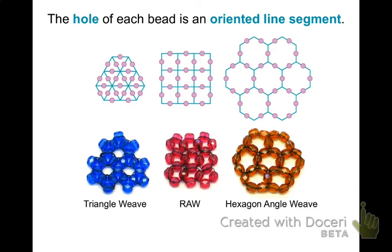A bead is anything with a hole, and a hole can be thought of as an oriented line segment in two or three dimensions. So rather than thinking of a bead as the glass or other material it is made from, I think of a bead as its hole. Thinking this way allows me to arrange the bead holes onto mathematical objects that are made up of line segments.